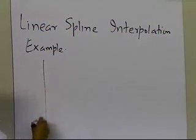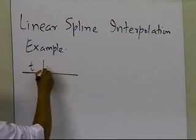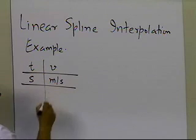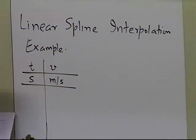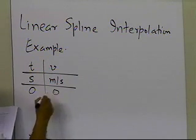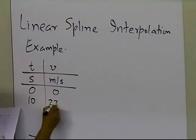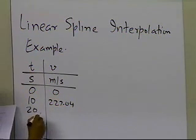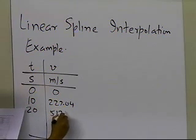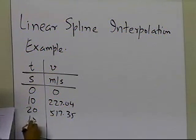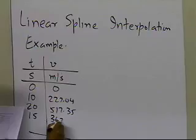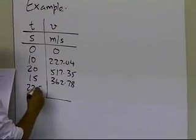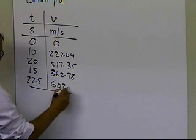So let's suppose somebody gives us the time versus velocity data for a rocket, and this is how the data is given to us. At 0, it is 0, at 10, it is 227.04, at 20, it is 517.35, at 15, it is 362.78, at 22.5, it is 602.97.